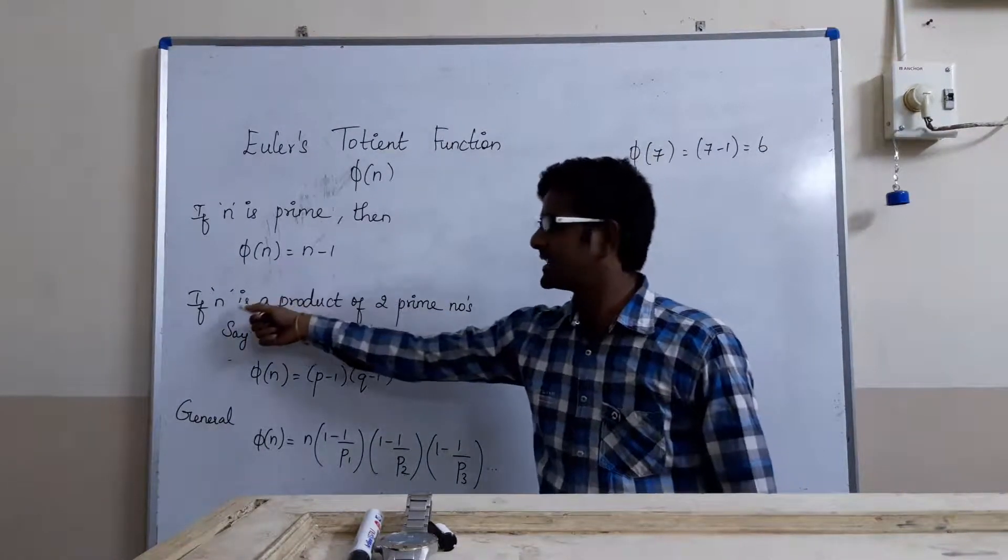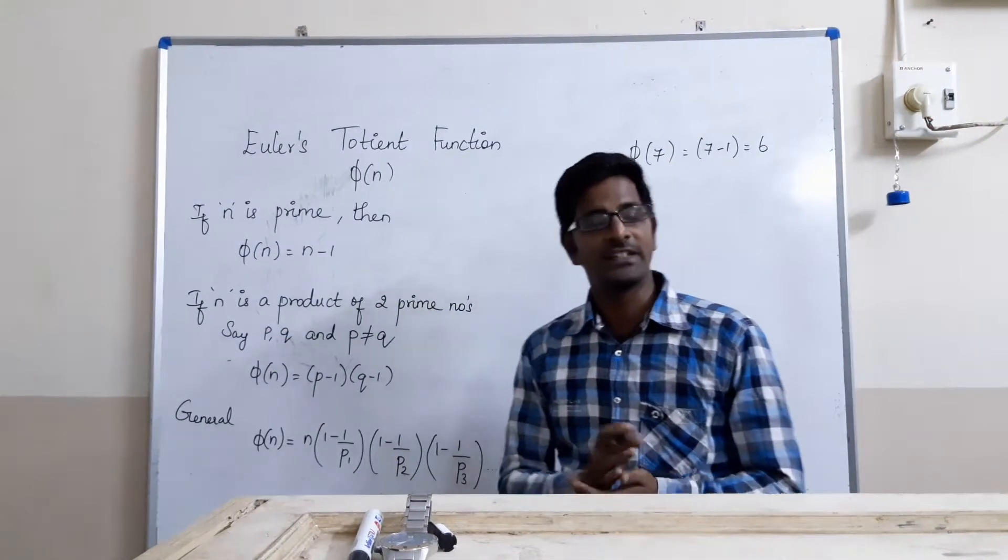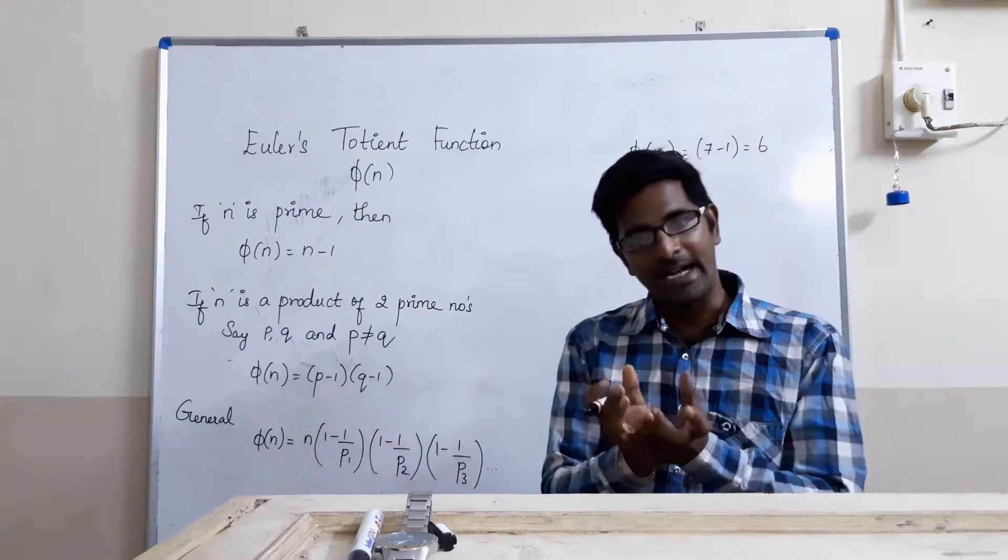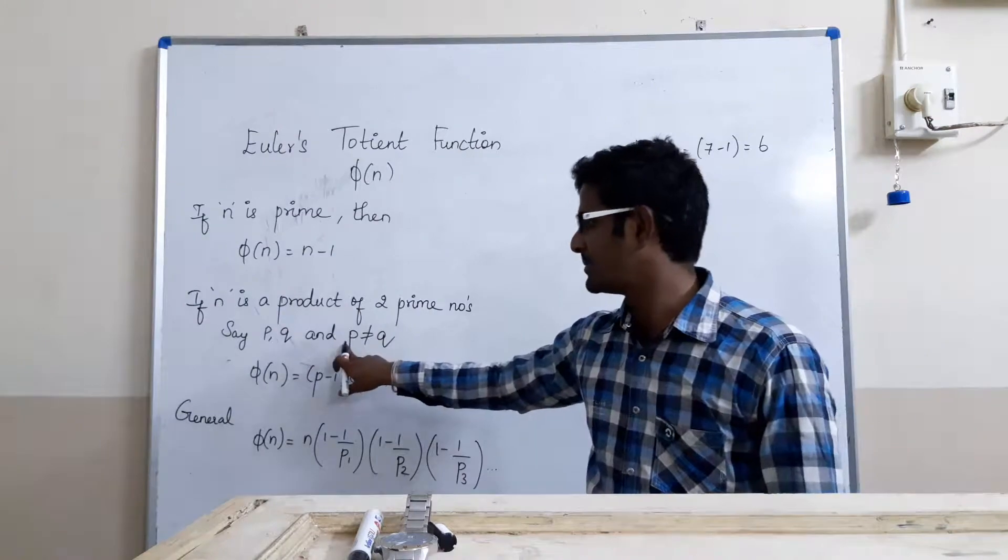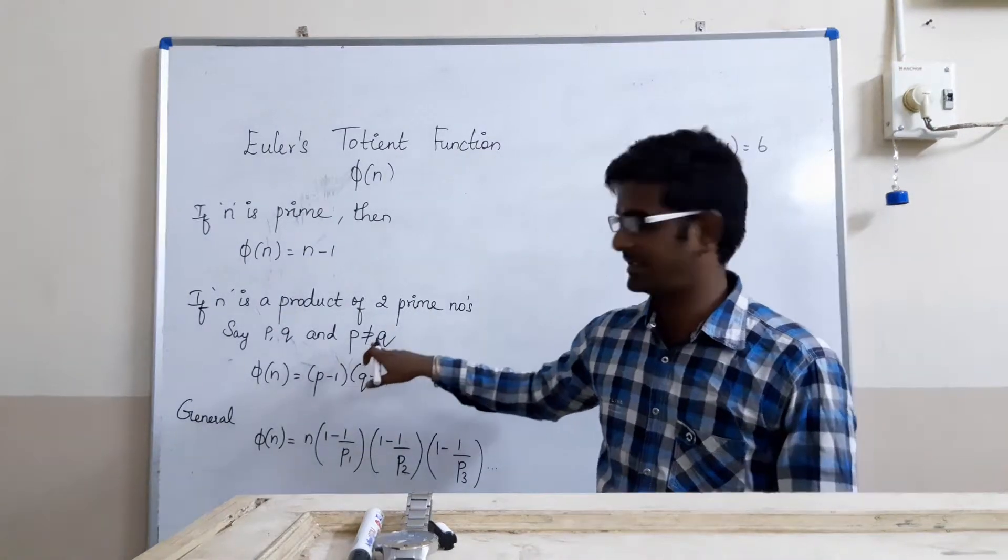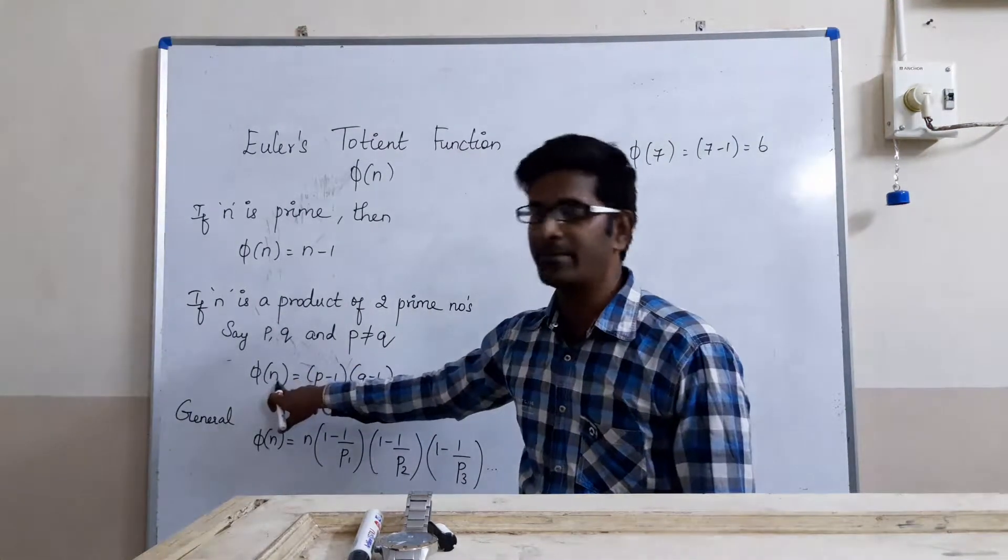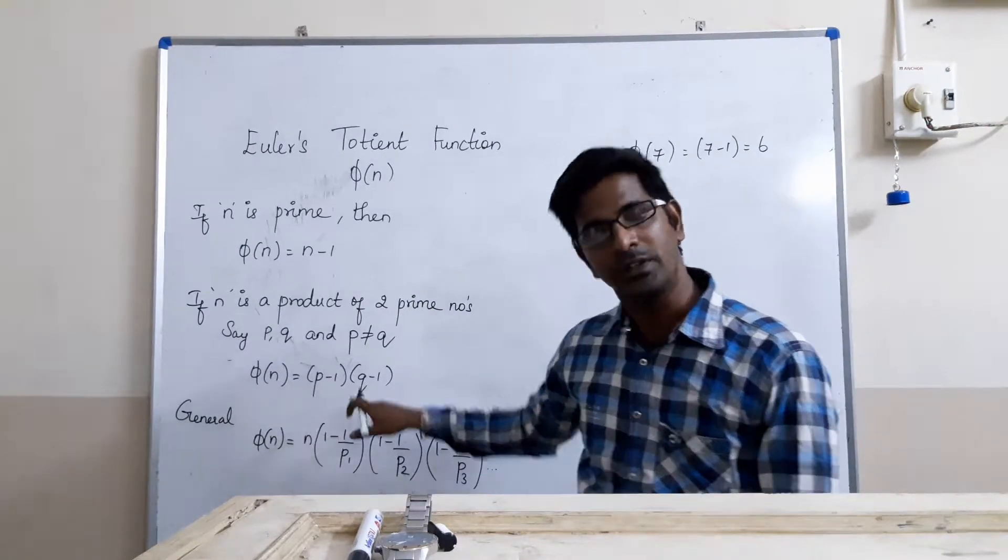Instead, if that n is not a prime number, if it is a composite number, but it is a product of two prime numbers and those two prime numbers are unique, are different, in that case, phi of n can be written as (p minus 1) into (q minus 1).